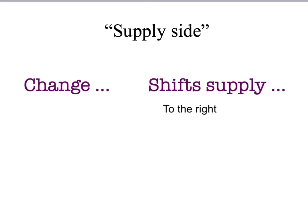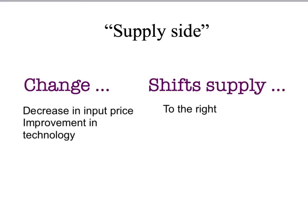Finally, let's look at changes that shift the supply curve to the right — these are the opposite of what we've just looked at. For example, if there's a decrease in an input price, that will tend to shift supply to the right. If wheat becomes cheaper, it becomes more profitable to supply bread, so given the price of bread, more people will want to sell bread. Similarly, if there's an improvement in technology — if it becomes easier to produce and distribute a product — then for any given price, sellers will want to sell more of that product than before the change.